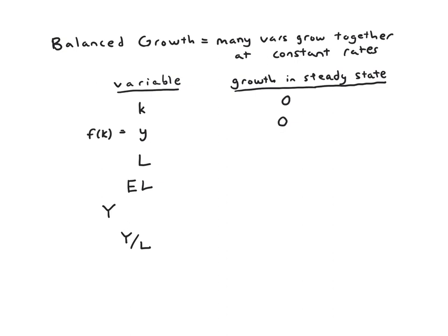But if we start thinking about the overall variables like L that don't represent per worker or per effective worker amounts, now things start to change. L is growing. We said it just grows exogenously at rate n. So let's put that into the table. And then if L is growing, presumably E times L will grow.